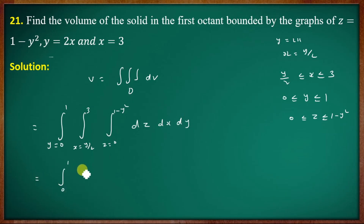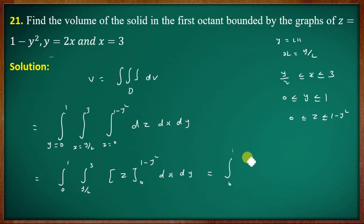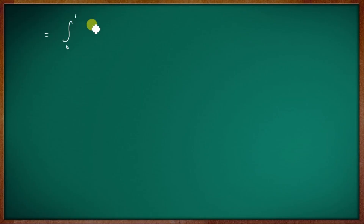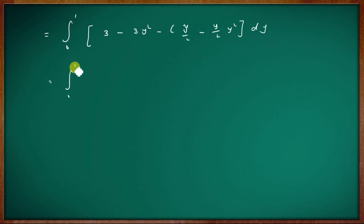Integrating first with respect to z: ∫₀¹ ∫_{y/2}^{3} (1 - y²) dx dy. Integrating with respect to x: ∫₀¹ [(1 - y²)x] from x = y/2 to x = 3 dy = ∫₀¹ [3(1 - y²) - (y/2)(1 - y²)] dy = ∫₀¹ (3 - 3y² - y/2 + y³/2) dy.